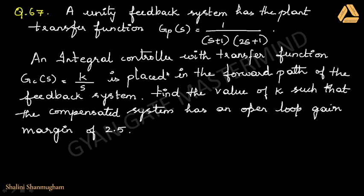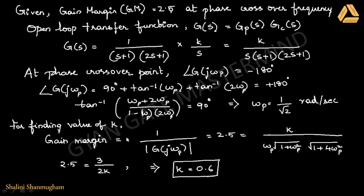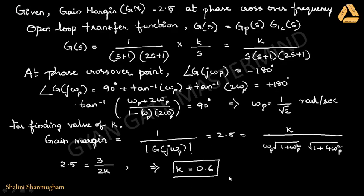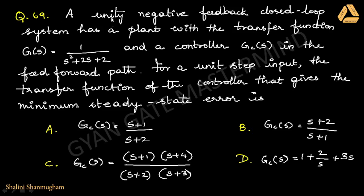Now we need to find the value of K such that the compensated system has an open loop gain margin of 2.5. The gain margin formula is the inverse of the magnitude of the transfer function at the phase crossover frequency. Substituting into this formula and equating it to 2.5, you get K equal to 1.6.